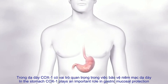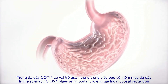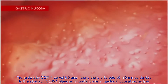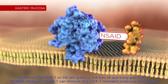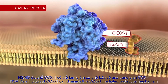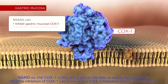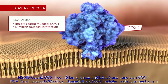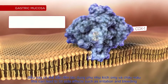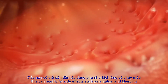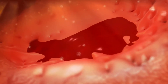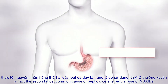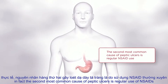In the stomach, cyclooxygenase 1 plays an important role in gastric mucosal protection. NSAID inhibition of COX-1 can diminish this protective mechanism, leading to GI side effects such as irritation and bleeding. In fact, the second most common cause of peptic ulcers is regular use of NSAIDs.